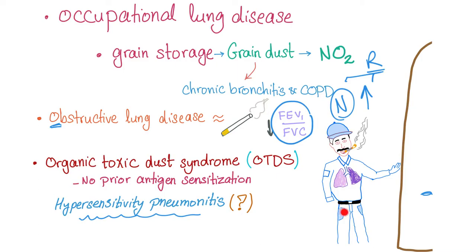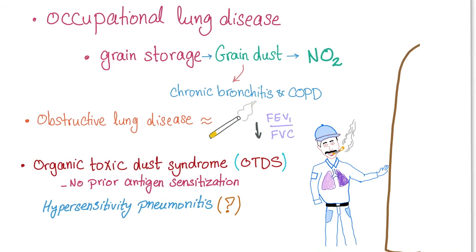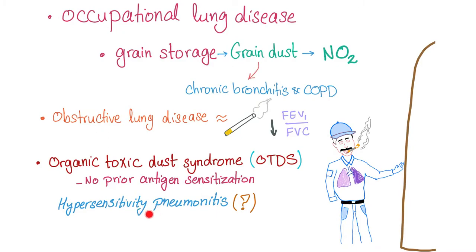Scenario two: a farmer goes into the silo and within seconds or minutes starts having an allergic reaction, coughing severely. This goes more with hypersensitivity pneumonitis. However, if it's a chronic process, it goes with OTDS. So scenario one has the allergic component, and scenario two is the chronic process.